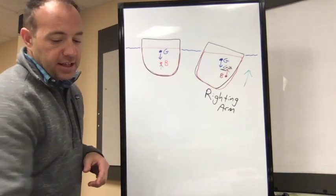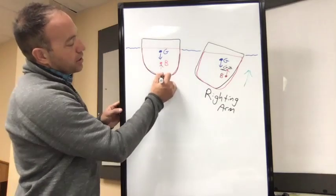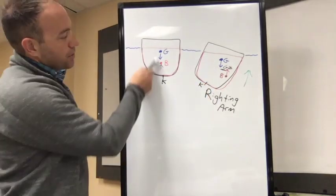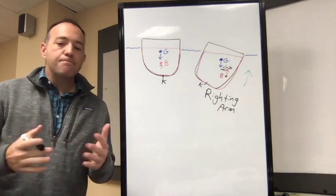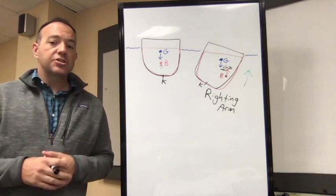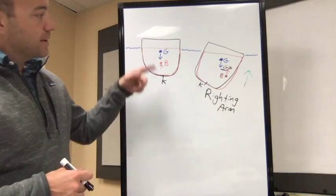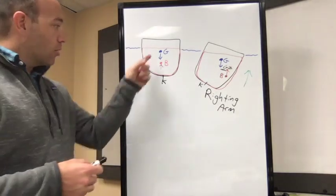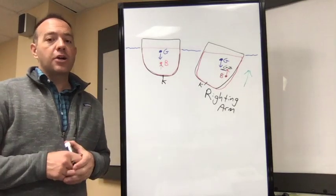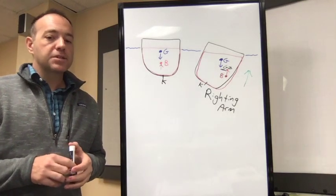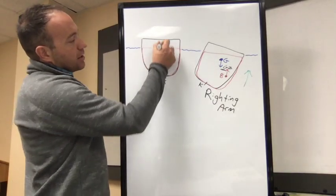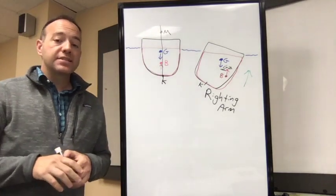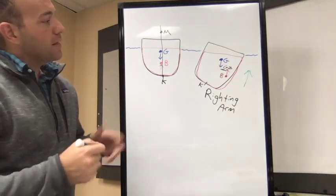There's another point on the vessel labeled K, which is the keel. KG is a way to measure where the center of gravity is compared to the keel. If KG gets big, the center of gravity is high on the vessel; if KG gets small, the center of gravity is lower. Generally speaking, a lower center of gravity is good for stability and a higher center of gravity is bad.